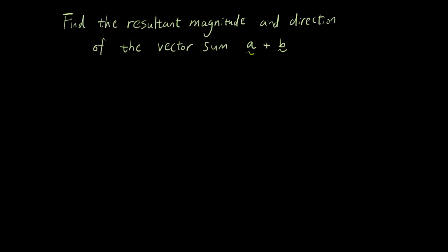Find the resultant magnitude and direction of the vector sum a + b. So there are two vectors, we want to add them together and find out for the resultant vector what is the magnitude and what is the direction. So what are these two vectors?